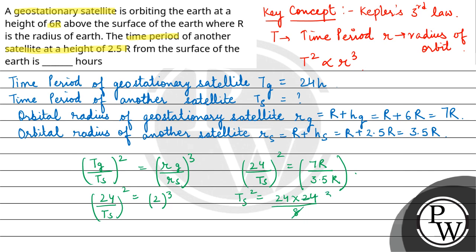Cancelling it, we will get TS is equal to 24 into 3 under the root, which is equal to 6 root 2 hours. So for your second satellite, the time period is 6 root 2 hours. I hope you understood it well. Best of luck.